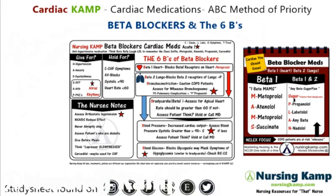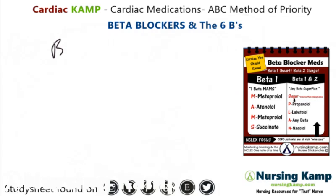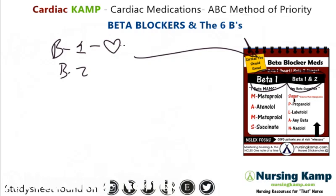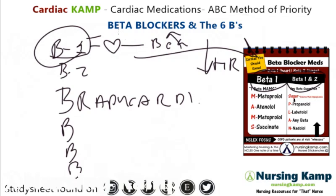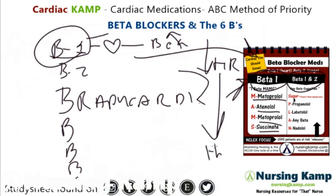When giving a beta blocker, there's secondary monitoring we must do based on these six B's. The first is beta 1 and beta 2. Beta 1 — think of one heart — so if you're blocking this mechanism you're going to slow down the heart rate. By slowing down the heart rate, we monitor that patient for bradycardia. Specific beta 1 blockers like metoprolol and atenolol will cause decreased heart rate because they only affect beta 1.